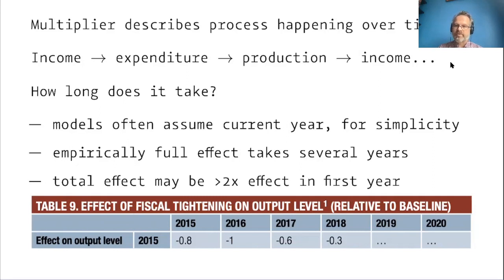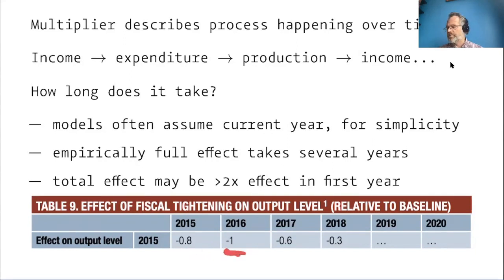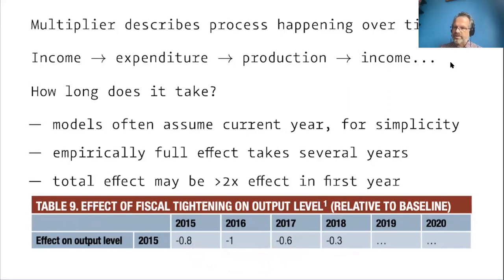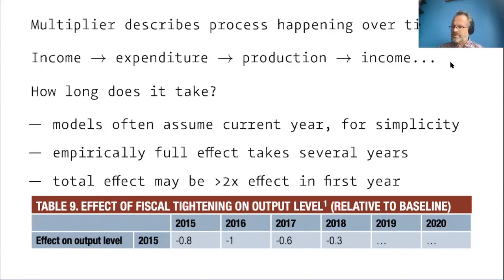Whether you believe the IMF's time-pattern estimate or think like the CBO that impacts are more front-loaded, as soon as we're talking about multipliers in the real world you have to have a view on timing one way or the other. As an example, if a stimulus bill gets signed and checks go out now, based on this kind of analysis it would have a significant effect on GDP this year, an even bigger effect next year, a substantial effect two years out, and a noticeable effect three years out.